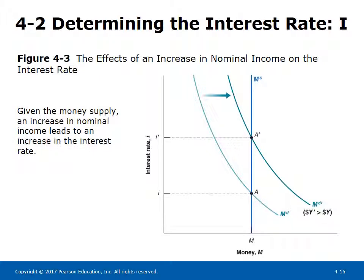Figure 4-3 illustrates the effects of an increase in nominal income on the interest rate. Given the money supply, an increase in nominal income — shown by a rightward shift of the money demand curve — leads to an increase in the equilibrium interest rate. The adjustment mechanism works through the bond market: when demand for money increases at the existing interest rate, people sell bonds to hold more currency, causing bond prices to fall and interest rates to rise.